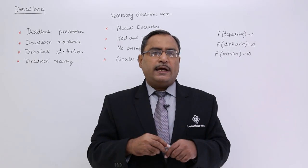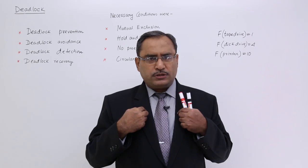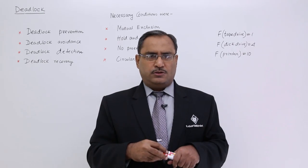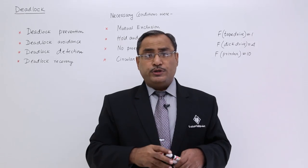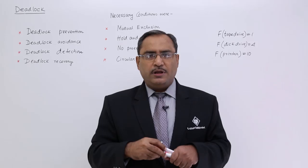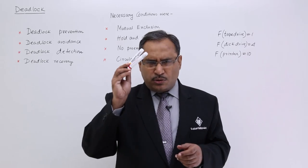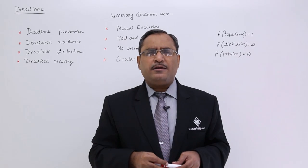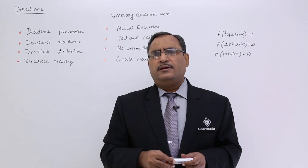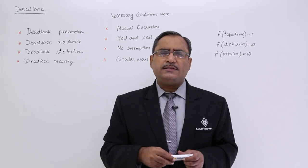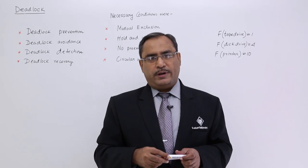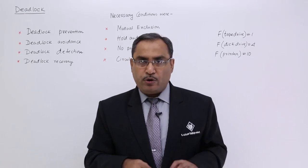Another problem is that suppose I am a process demanding very popular common resources — three to four such resources which are required by multiple processes for their execution. As those resources are in high demand, I might be having a long waiting time, and this is known as starvation. That is another problem of hold and wait. Obviously you should go in an optimum way.